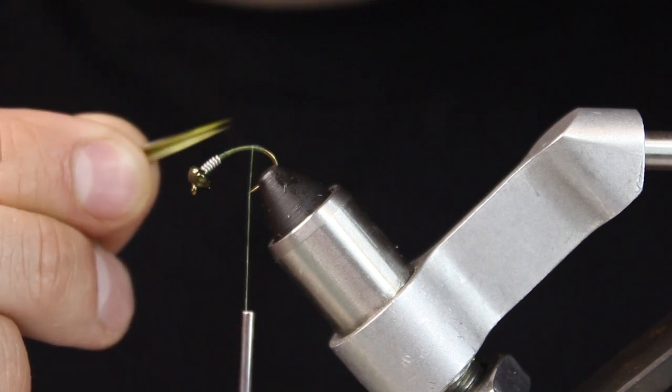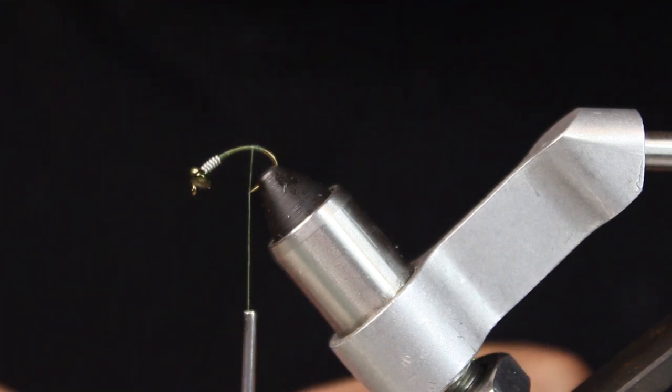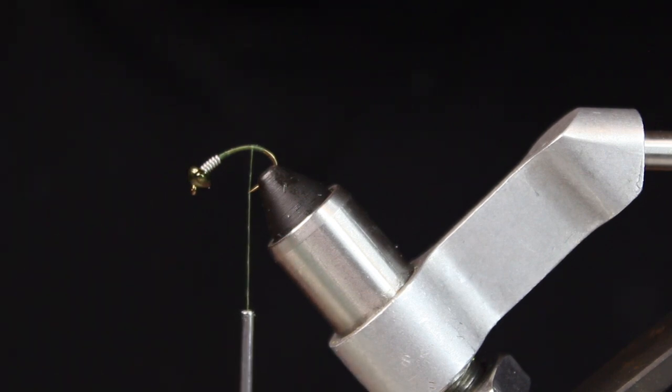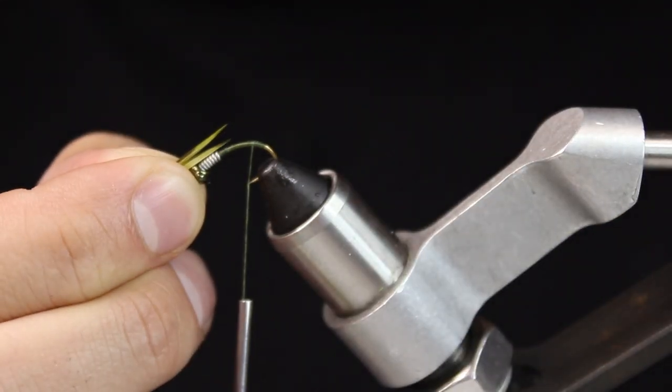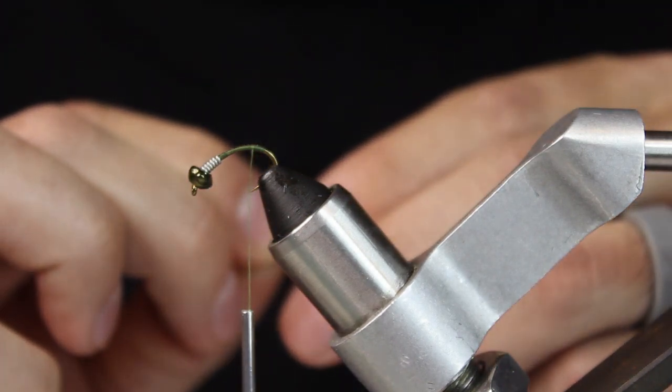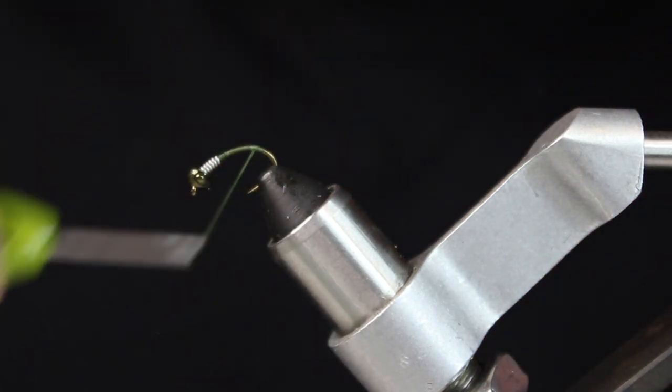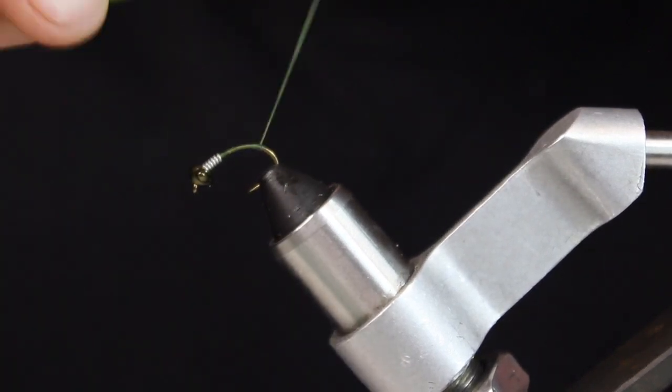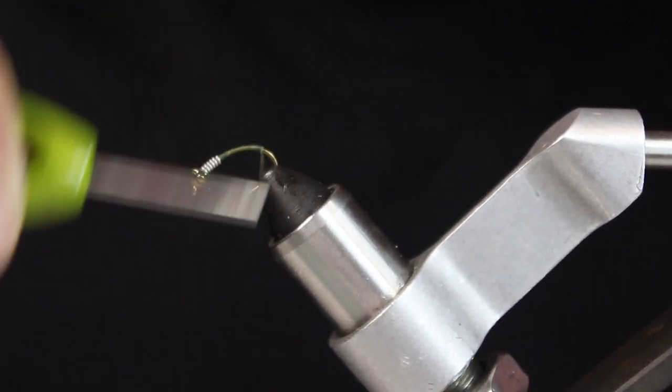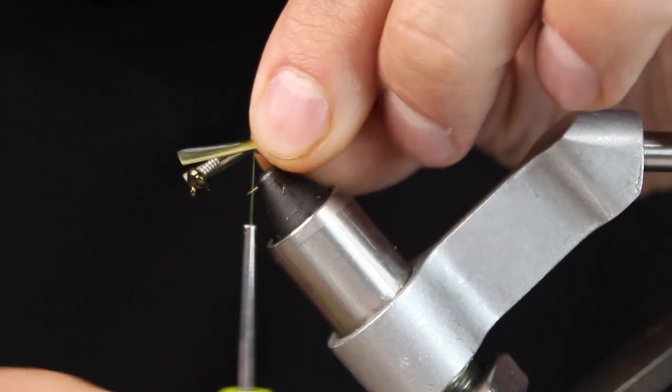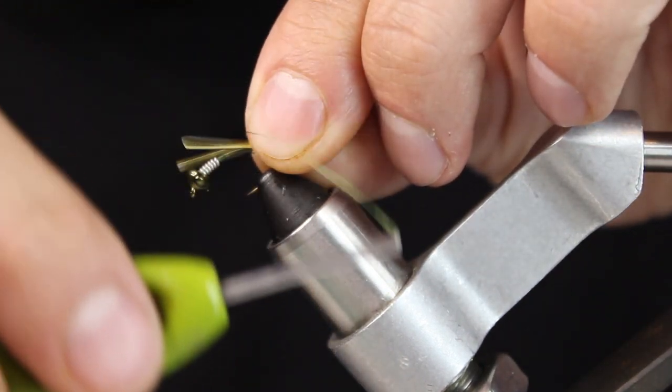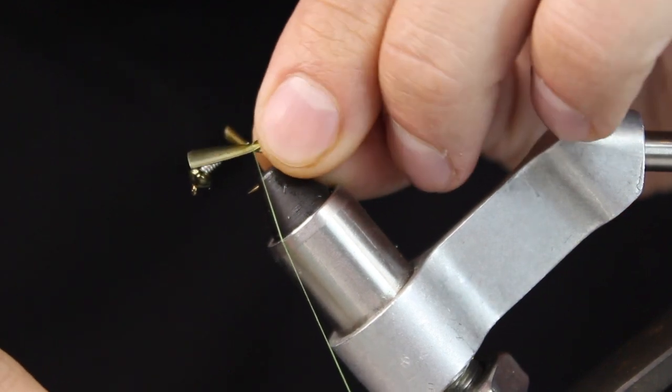I always even use the ones that are not perfectly pointed, which is alright. These are from Charlie's Flybox, I think. I really like them. I love goose biots, but I hate them at the same time. They can be so finicky, it's crazy.